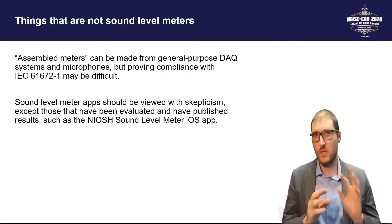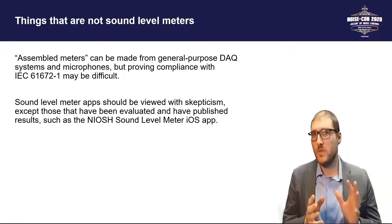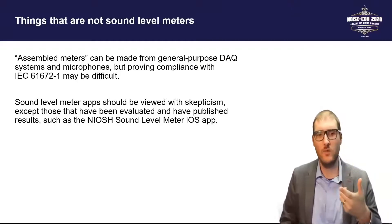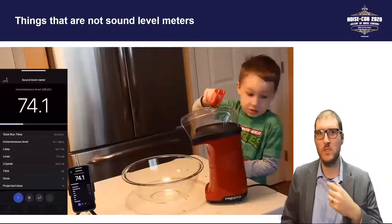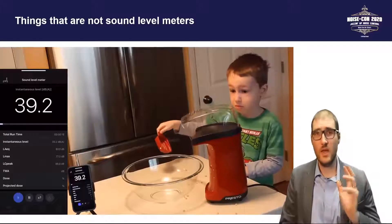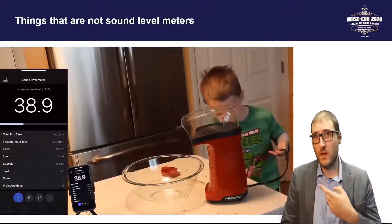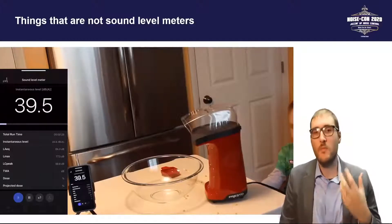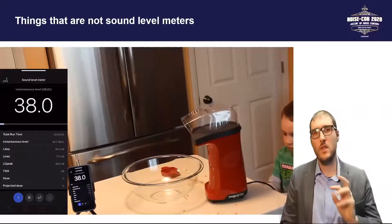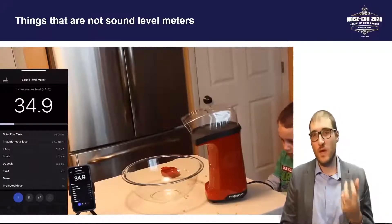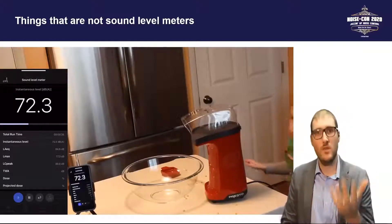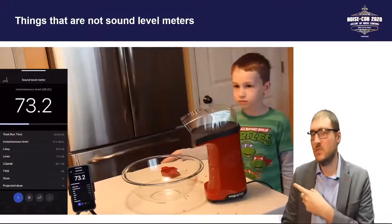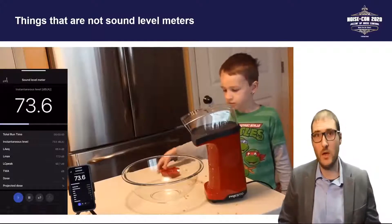This also applies to smartphone-based sound level meter apps — most are not guaranteed to be accurate. One worth looking at is the NIOSH sound level meter iOS app for Apple devices only. It has useful features like measuring equivalent A-weighted level, simultaneous C-weighted peak level, and even noise dose. But it doesn't necessarily meet all IEC standard requirements. It's useful to carry for quick measurements, but when you need to prove that your sound levels are what you say they are, an app-based meter is not always the way to go.